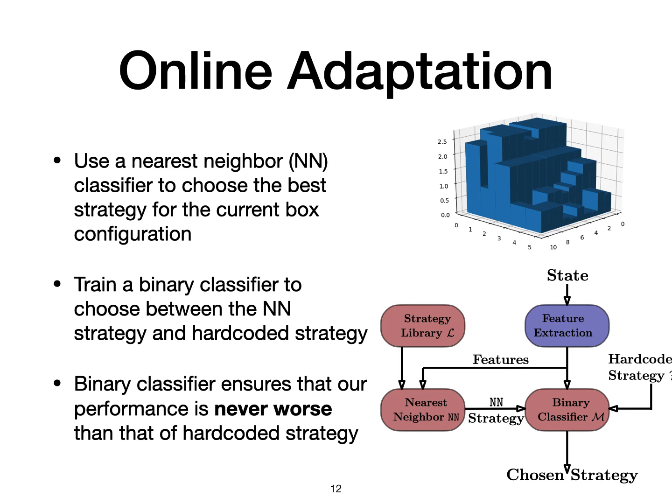At runtime, our online adaptation module reads in the perception of the box configuration from the robot and extracts a feature descriptor using a 3D histogram, as shown on the top right. This feature descriptor is used in a nearest neighbor regression algorithm to pick the best planned strategy from the strategy library. Finally, we train a binary classifier to choose between the best planned strategy and the hardcoded strategy using the simulator. The trained classifier ensures that the performance of the strategy picked by the online adaptation module is never worse than the hardcoded strategy.